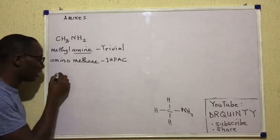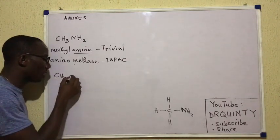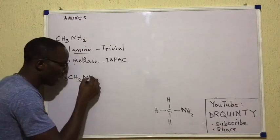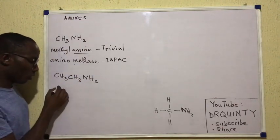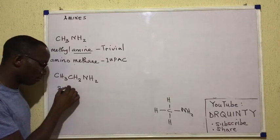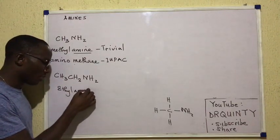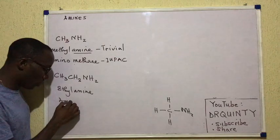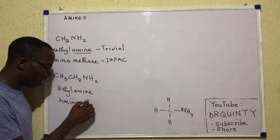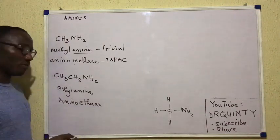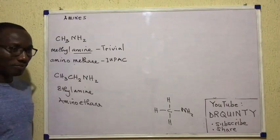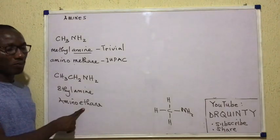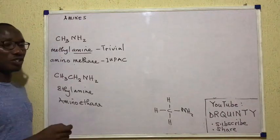See this other one, which is the next amine in line — we write it as CH3CH2NH2. For this one, you will call it ethylamine, or you say aminoethane. Now if I may ask, which of those two names would be the IUPAC name? That's correct — aminoethane. That's the IUPAC name, but ethylamine is trivial.